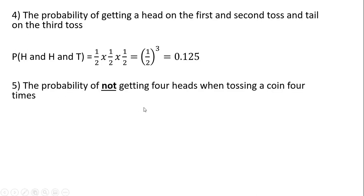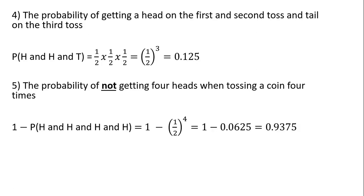The probability of not getting four heads when tossing a coin four times is one minus the probability of getting four heads. The probability of getting four heads is one-half to the fourth power. So one minus one-half to the fourth power gives us almost a 94% chance that we won't get four heads in a row.